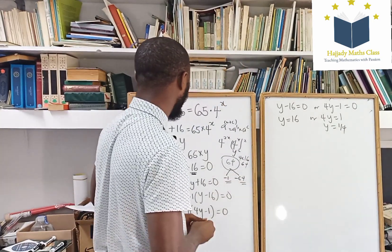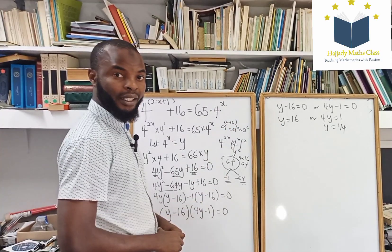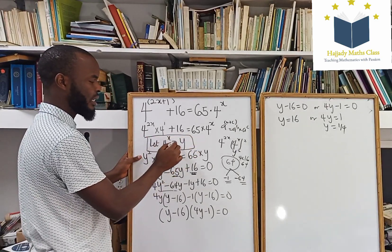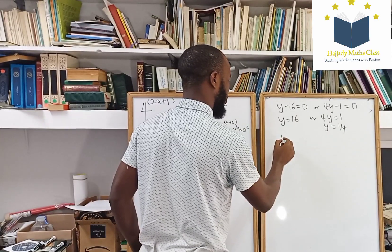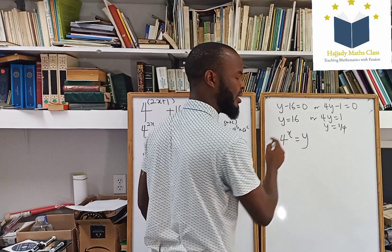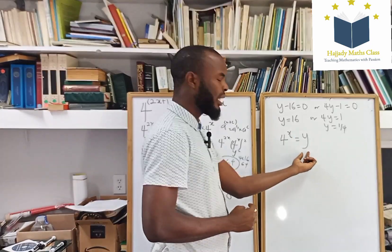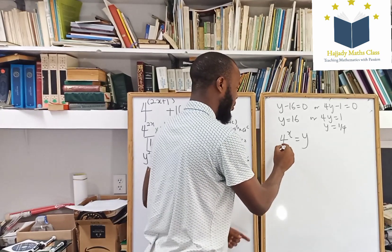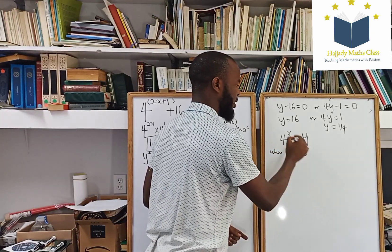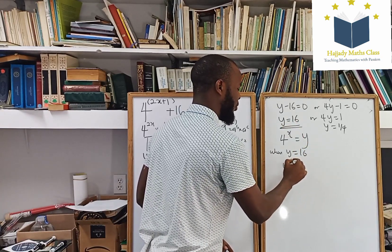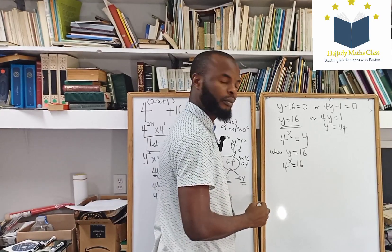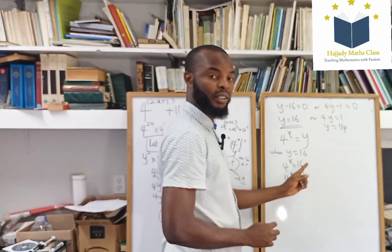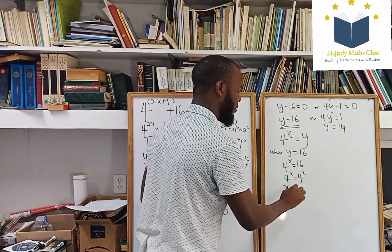Recall that we want to solve for x, and we've solved for y. Coming back, I had let 4 to the power of x equal y, and we're interested in solving for x. So we plug in the values of y. When y equals 16, we have 4 to the power of x equals 16, which is 4 to the power of 2. Since the bases are the same, x equals 2.